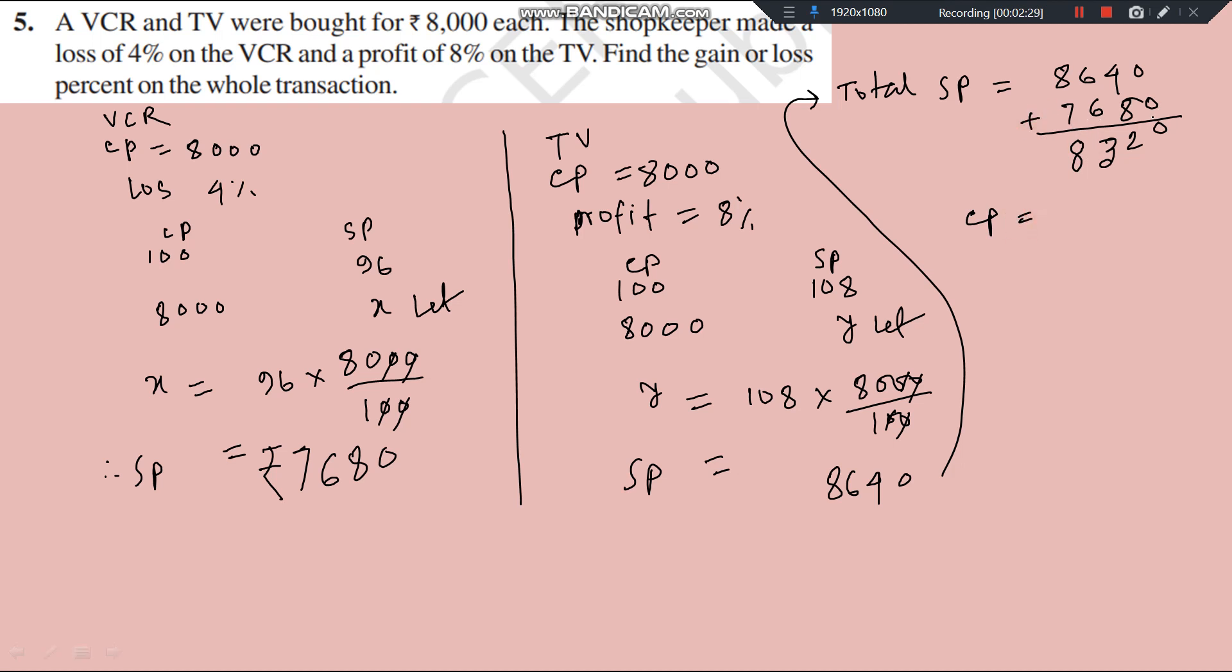So, it is coming, carry 1 at 16,000, 16,320 at CP is equal to 8000 plus 8000. That is 16,000.